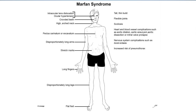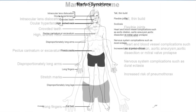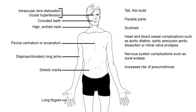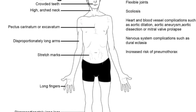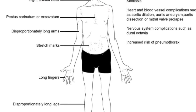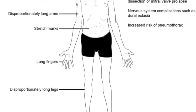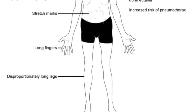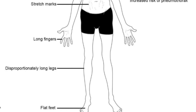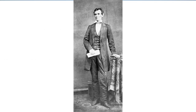One condition you may have never heard of is called Marfan syndrome, and about 5% of people who have issues around aortic dissection have this condition. You can almost tell when you see someone if they're at risk just by looking at them. Signs include dislocated intraocular lens, crowded teeth, arched neck, pectus carinatum — where your chest is kind of sunken in — long arms, stretch marks, long fingers, long legs, flat feet, thin tall stature, flexible joints, and possibly scoliosis. Marfan syndrome increases your risk for blood vessel complications, including aortic dissection. Abraham Lincoln was thought to possibly have had this condition.